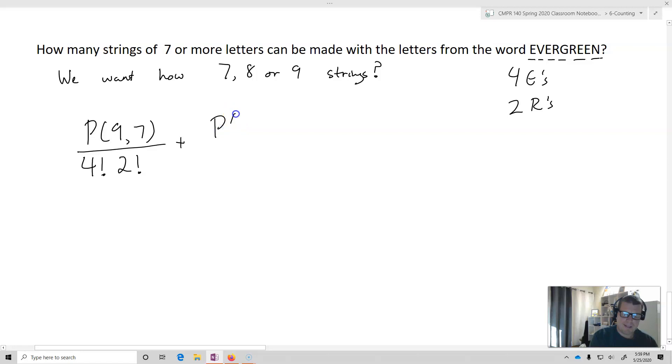For the R's, there's two of them. Then plus I'm going to take the permutation of nine, choose eight. Nine, choose eight. Now I'm only choosing eight of them. And I'm going to divide that through by four factorial. And then plus I'm going to just take nine factorial. That is, I'm going to have all nine of them. And I'm going to divide that through by four factorial, two factorial.